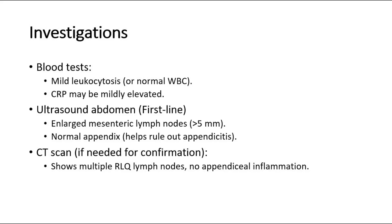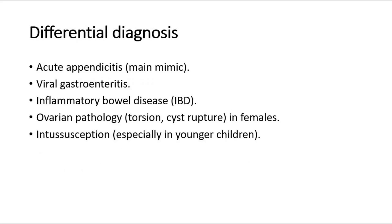Ultrasound of the abdomen is the first-line investigation, showing enlarged mesenteric lymph nodes. A normal appendix on ultrasound helps rule out appendicitis. CT scan, if needed for confirmation, shows multiple right lower quadrant lymph nodes with no appendiceal inflammation.